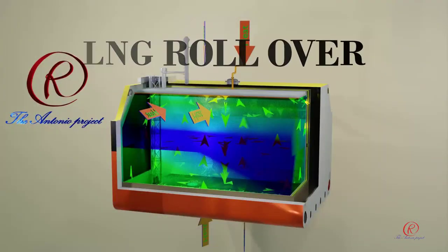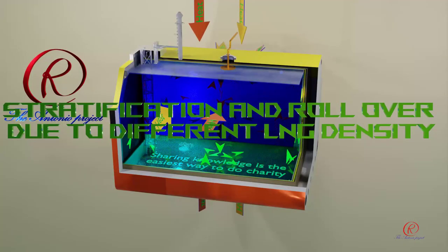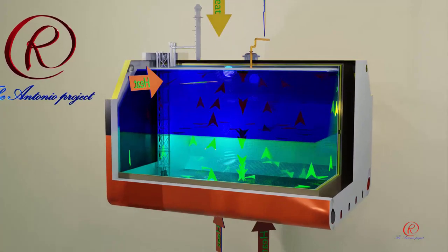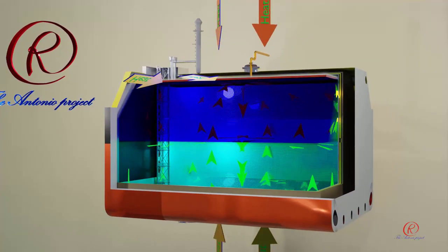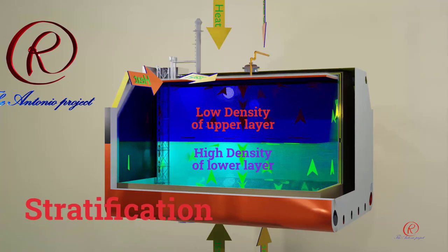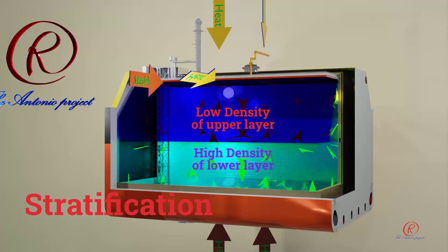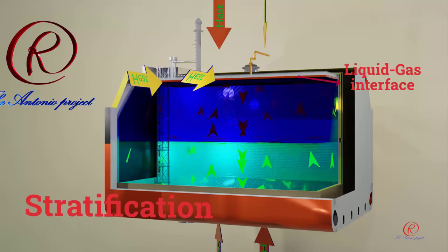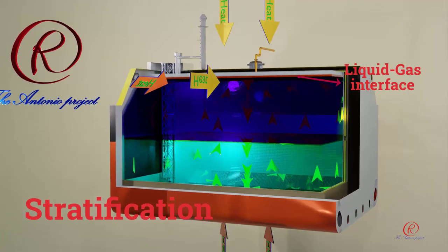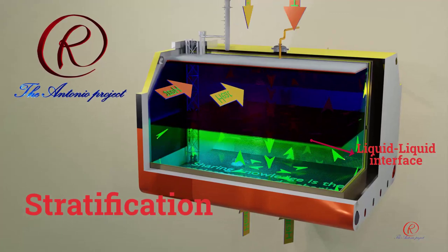LNG Rollover. Rollover refers to the rapid release of LNG vapor that can occur as a result of the spontaneous mixing of layers of different densities of LNG in a storage or cargo tank. A precondition for rollover is that stratification has occurred — the existence in the tank of two separate layers of LNG of different density. The liquids form two layers with the lighter liquid on top of the heavier. Heat entry causes weathering on the top layer, where the lighter components evaporate and the specific gravity increases.